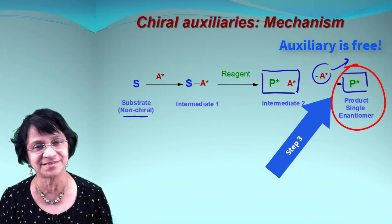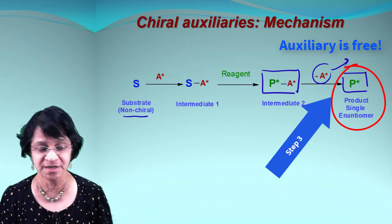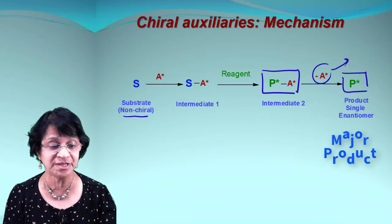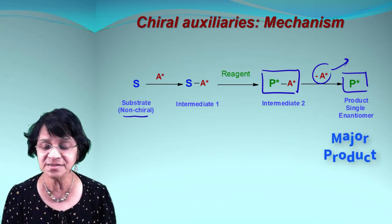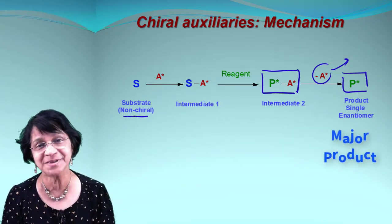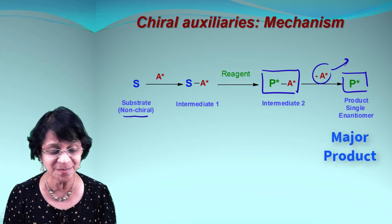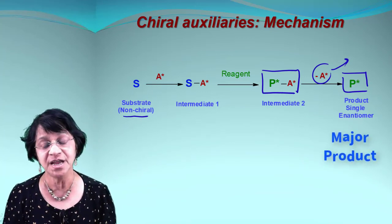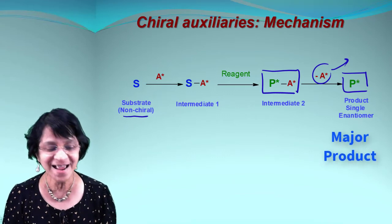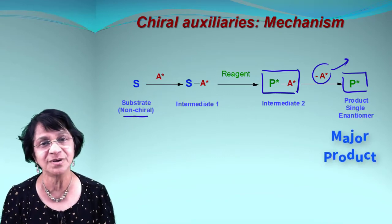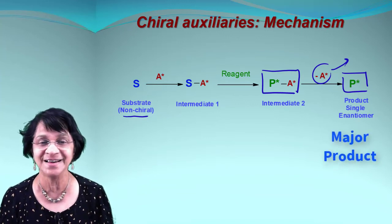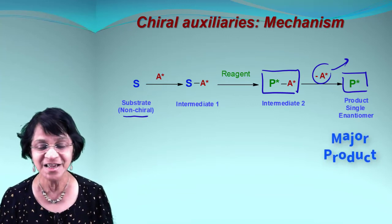In step three, the chiral auxiliary comes off, and what we get is the desired product as a single enantiomer. Ideally it would be perfect to get a single enantiomer without any impurities, but it is practically impossible to get 100% pure substance, so it still needs some purification — though not as much as regular synthesis without chiral auxiliaries.